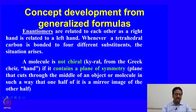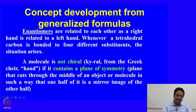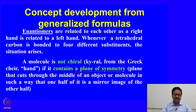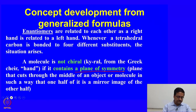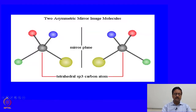Enantiomers are defined as being related to each other as a right hand is related to a left hand, and this situation arises whenever a tetrahedral carbon is bonded to four different substituents. A molecule is not chiral if it contains a plane of symmetry — this is very important. A plane of symmetry cuts through the molecule into two parts and those two parts are mirror images of each other, and as a result that molecule cannot be a chiral molecule.